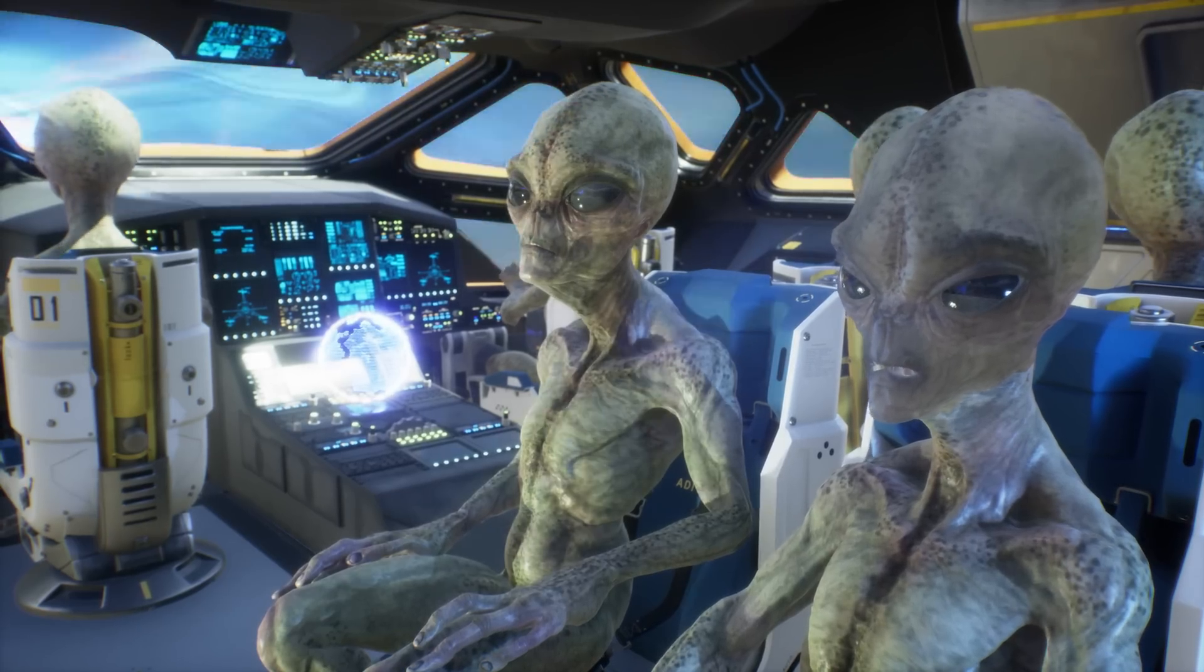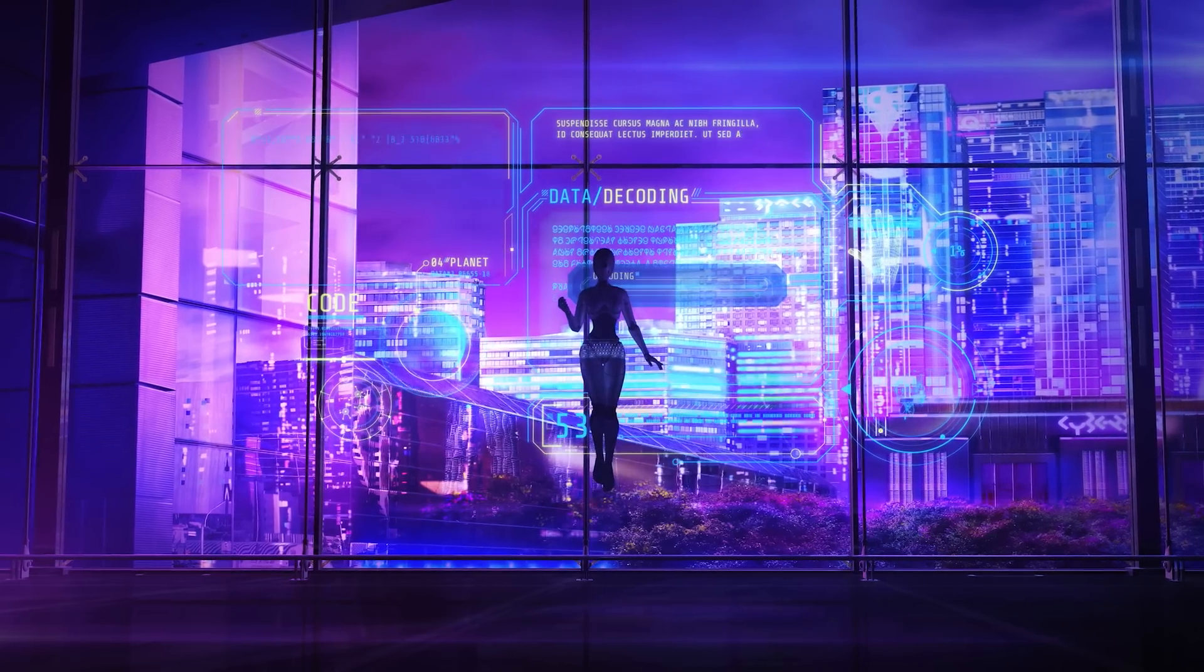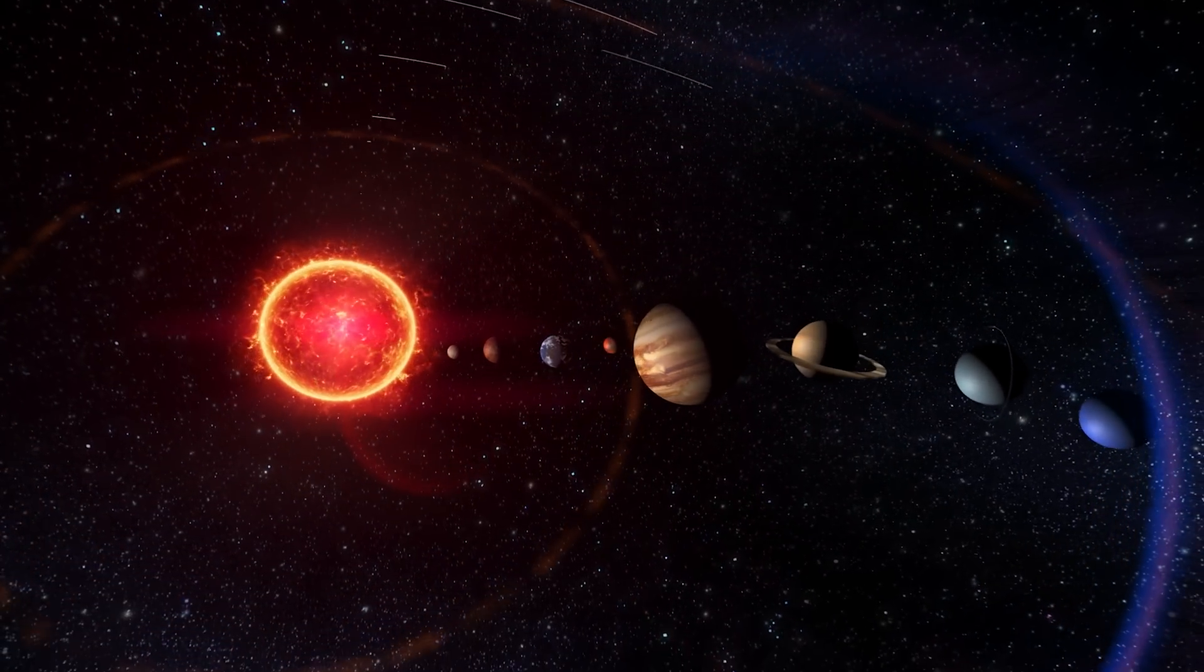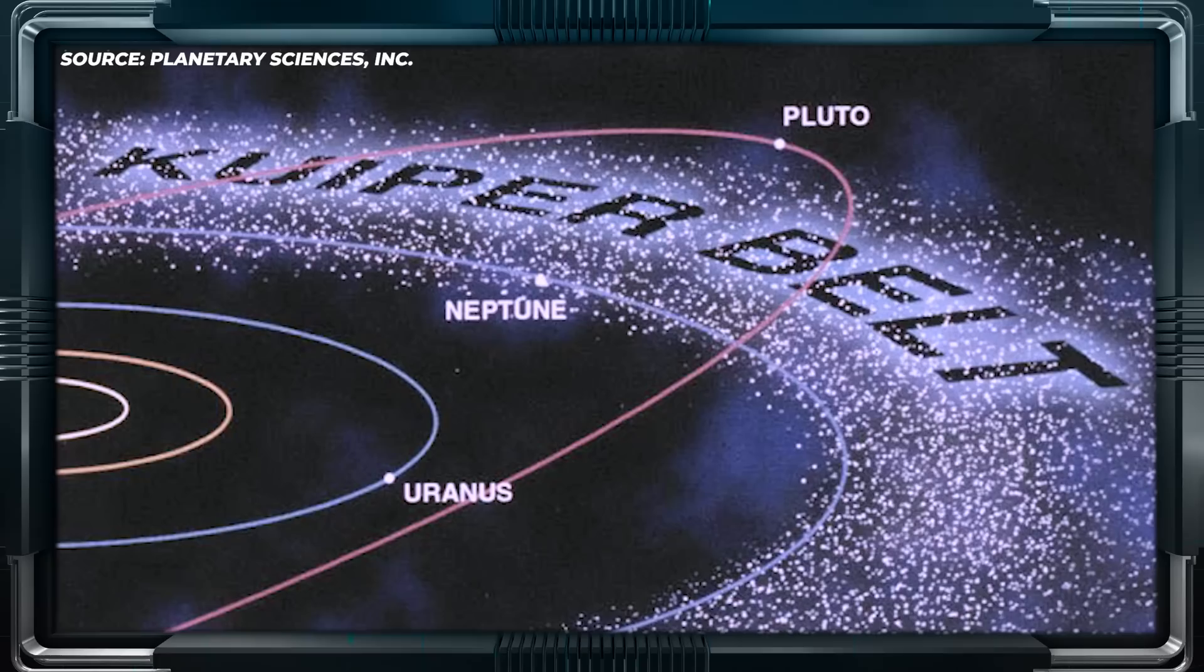Before we delve deeper into the topic, let's take a moment to review some background information about Pluto. As the largest known dwarf planet in the solar system, Pluto is located in a strange region of the Milky Way called the Kuiper Belt, which is located beyond the orbit of Neptune.